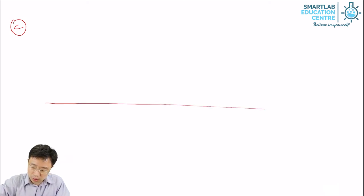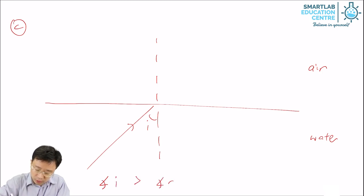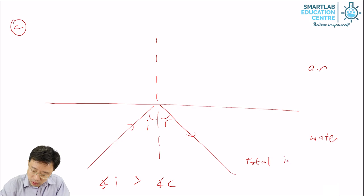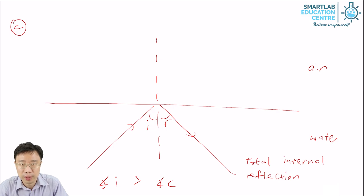The third case: if the angle of incidence is greater than the critical angle, then all the light will be reflected back into the water. This is what we call total internal reflection. In the earlier two cases, a small amount of light is reflected back into the water, but in this case all the light is reflected back — that is why it is called total internal reflection.